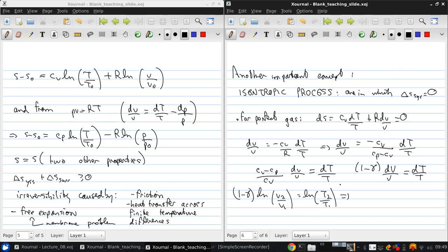So then taking e to the power of both sides, we get v2 over v1 to the 1 minus gamma equals t2 over t1.